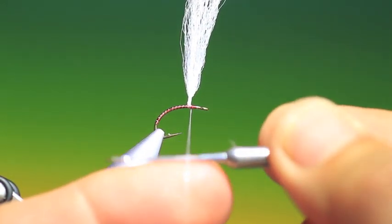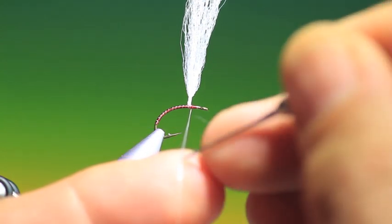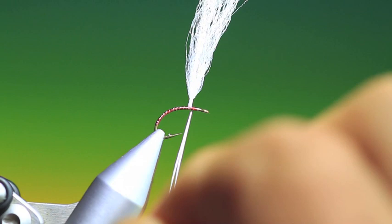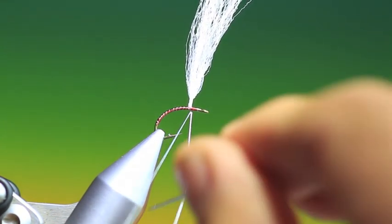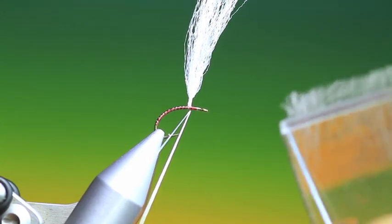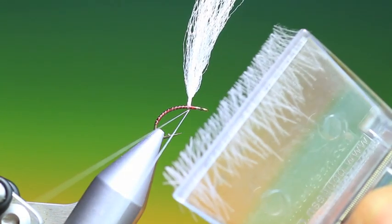And this floating poly yarn from Veniards gives a real nice little sparkle in the wing. So we just split our thread. I've loaded another petitjean clip with a color that he calls Light Mallow.